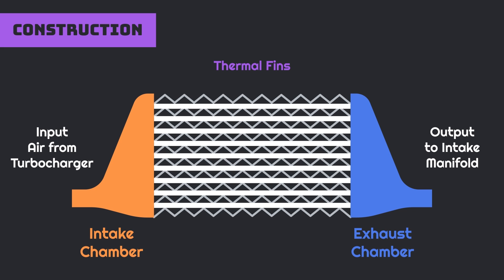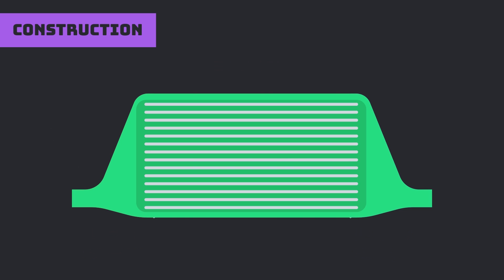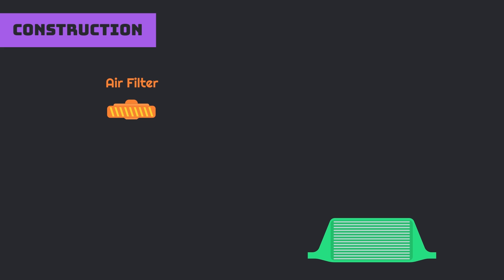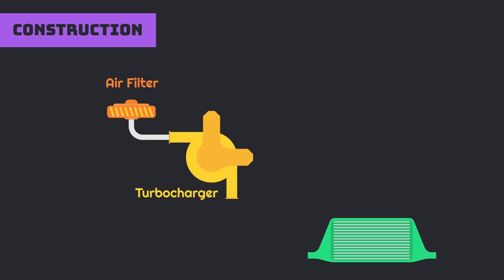These fins increase the thermal capabilities of intercooler by increasing the contact area with the atmosphere. In the circuit of intercooler, the first component is the air filter. The air filter is connected with the turbocharger. The turbocharger advances to the intercooler, and the intercooler is connected with the intake manifold.